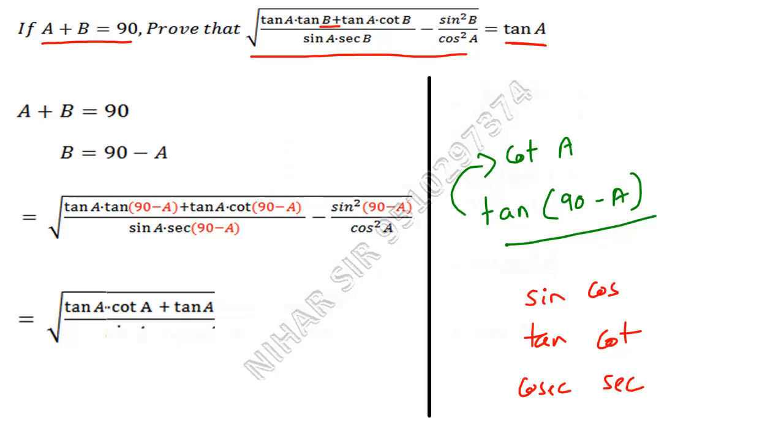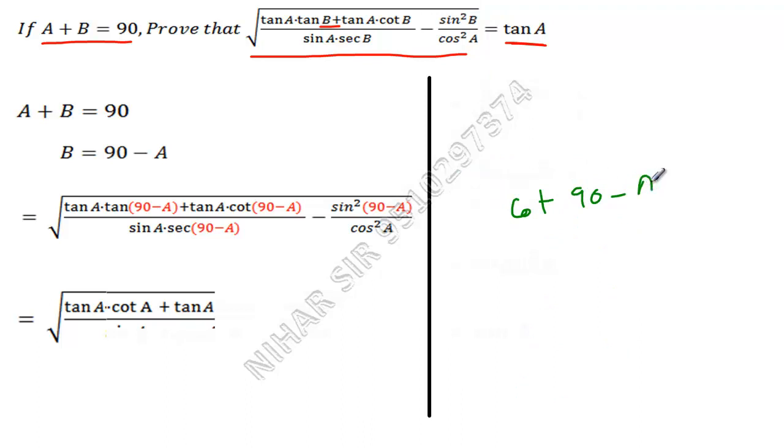So tan(90 minus A) is cot A, isn't it? Same way, let's understand this one: cot(90 minus A). Let me erase what I don't need. So here I have cot(90 minus A).